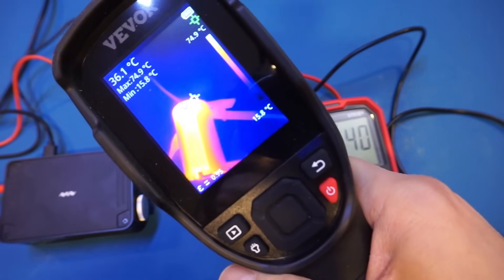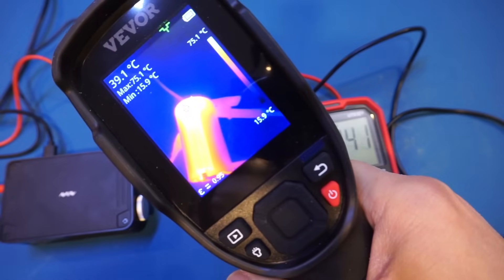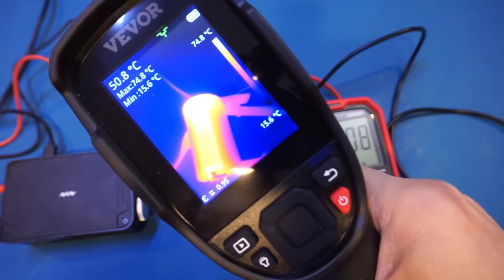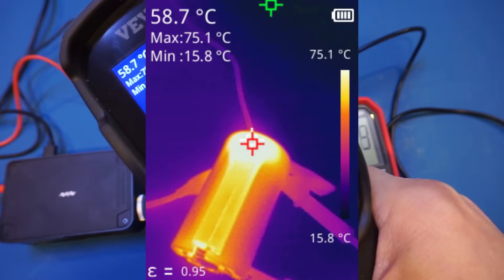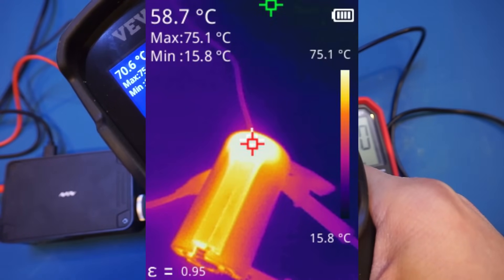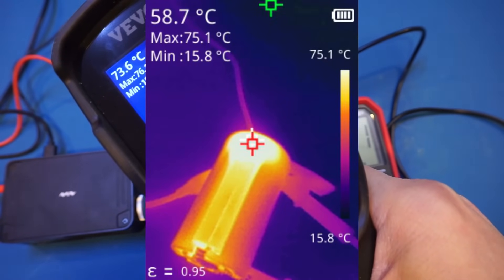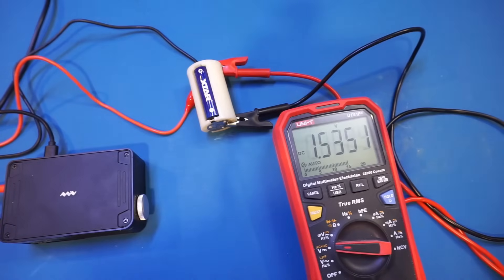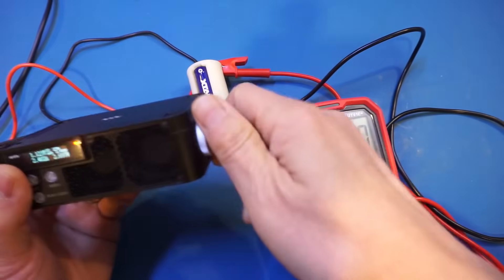And let's take a look at the battery temperature here. Oh my goodness, it's at 75 degrees, and it's still rising. So let me take a picture here. So it's actually getting a little bit uncomfortably warm at 2.4 amps. So let's reduce it to 2 amps.